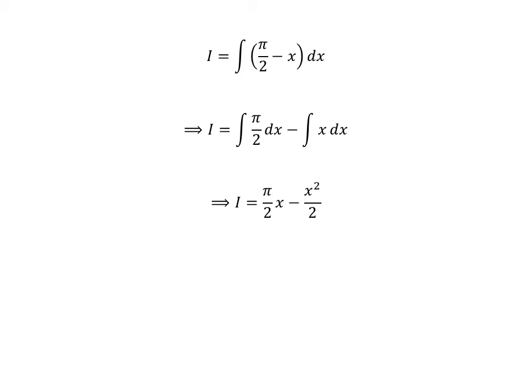As half of pi is constant, so integration of half of pi is half of pi times x. And integration of x is square of x upon 2.